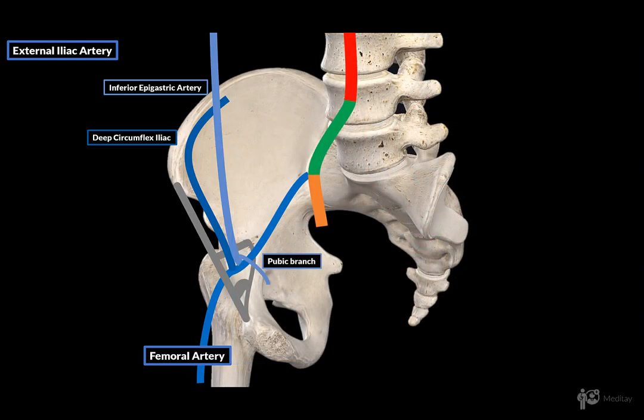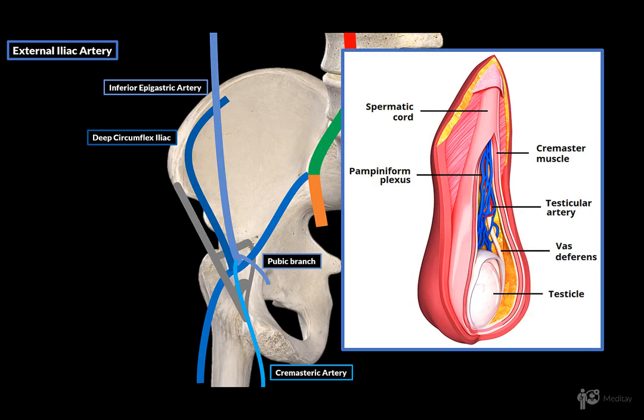The other branch is found only in males, and this one is the cremasteric artery. It travels along the inguinal canal to supply a muscle called the cremasteric muscle, found around the testis. The cremasteric muscle's function is to raise and lower the testis in order to regulate the scrotal temperature for optimal spermatogenesis and the survival of the resultant spermatozoa.